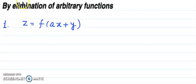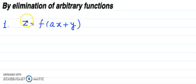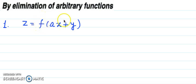In the previous lecture I shared the formation of partial differential equations by elimination of arbitrary constants. In this lecture I'll share the formation of PDEs by elimination of arbitrary functions. When the relation of x, y, z is given in terms of some unknown function, that is called an arbitrary function, and we have to eliminate it.